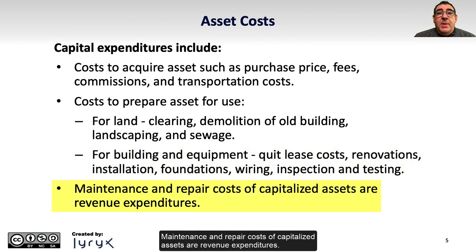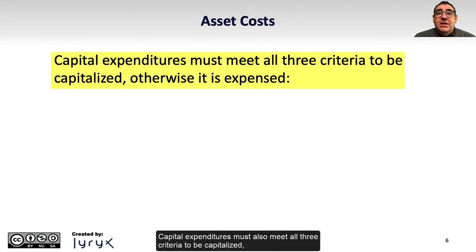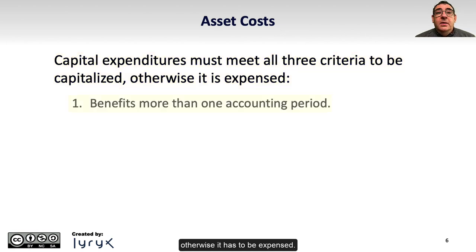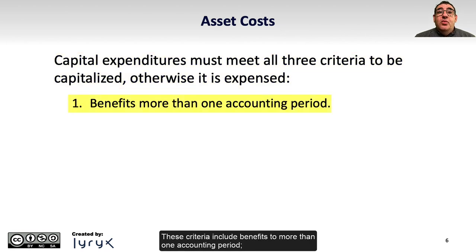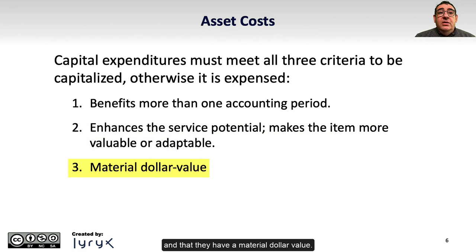Maintenance and repair costs of capitalized assets are revenue expenditures. Capital expenditures must also meet all three criteria to be capitalized; otherwise, it has to be expensed. These criteria include benefits to more than one accounting period, that they enhance the service potential and make the item more valuable or adaptable, and that they have a material dollar value.